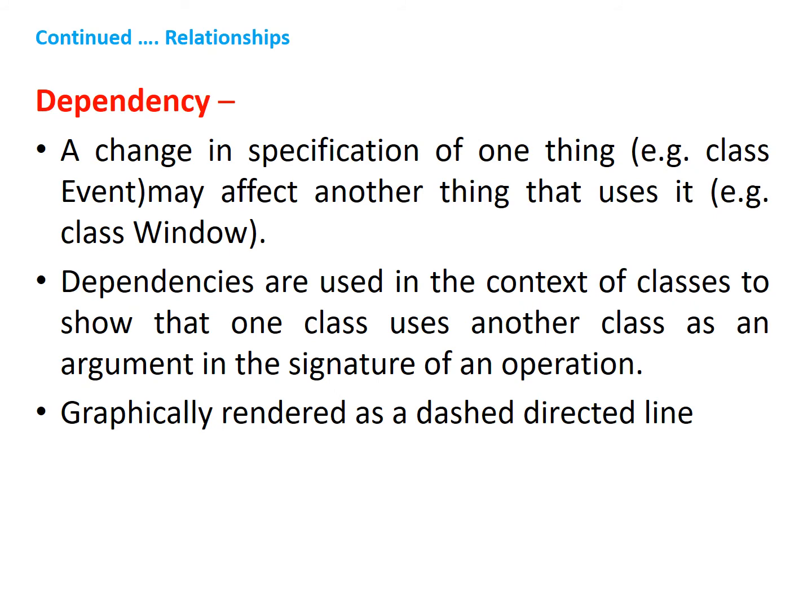Dependency. A dependency is a using relationship that states that a change in the specification of one thing — for example, class Event — may affect another thing that uses it, for example, the class Window. Graphically, a dependency is rendered as a dashed directed line. Dependencies are used in the context of classes to show that one class uses another class as an argument in the signature of an operation.